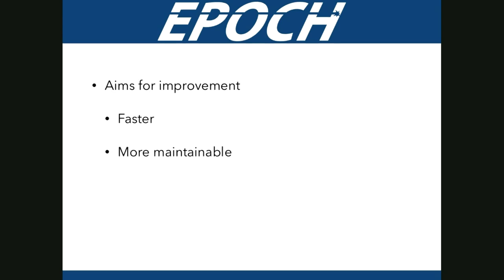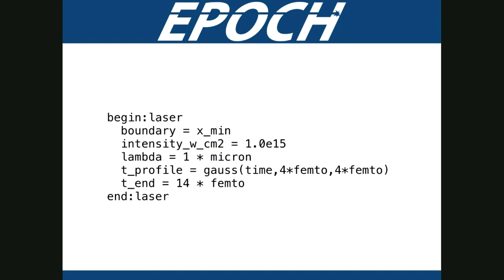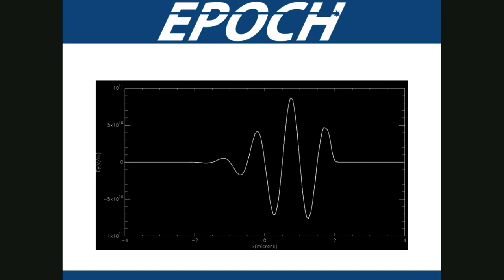The aims were to make the input deck reading faster and more maintainable. We wanted to be able to extend it further and, importantly, although the original was specifically tied to EPOC — a code written in Fortran — we didn't want to tie ourselves to Fortran forever. Here's one section of an EPOC deck: a block specifying properties of a laser, surrounded by begin and end markers, with key-value pairs including intensity, wavelength, and a temporal profile as a mathematical function.